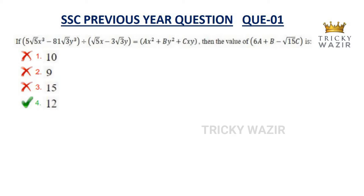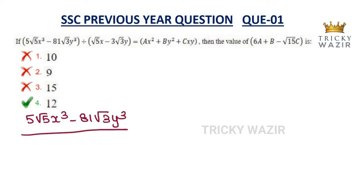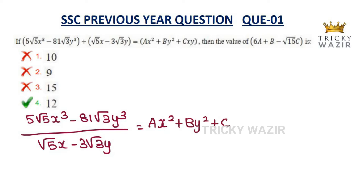First, let's look at the numerator: 5√5·x³ minus 81√3·y³, divided by √5x minus 3√3y, equal to Ax² plus By² plus Cxy. Now, 5√5·x³ can be written as (√5x)³, since (√5x)³ = √5·√5·√5·x³ = 5√5·x³.